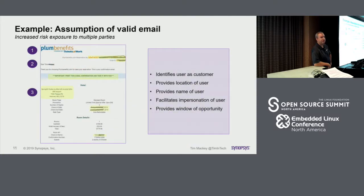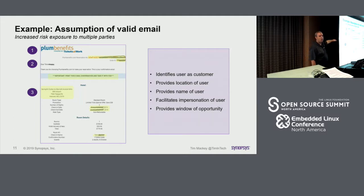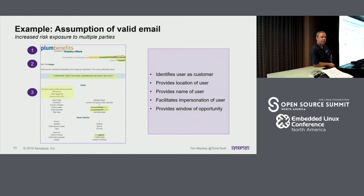Another variation: Plum Benefits is a company that does benefits management for smaller organizations. One person decided they were going to book a hotel in Baltimore by the airport on certain dates, and the confirmation — including their name — came to me. What can I use to impersonate them? What do I now know that could facilitate a different type of attack? They were surprised I received it.